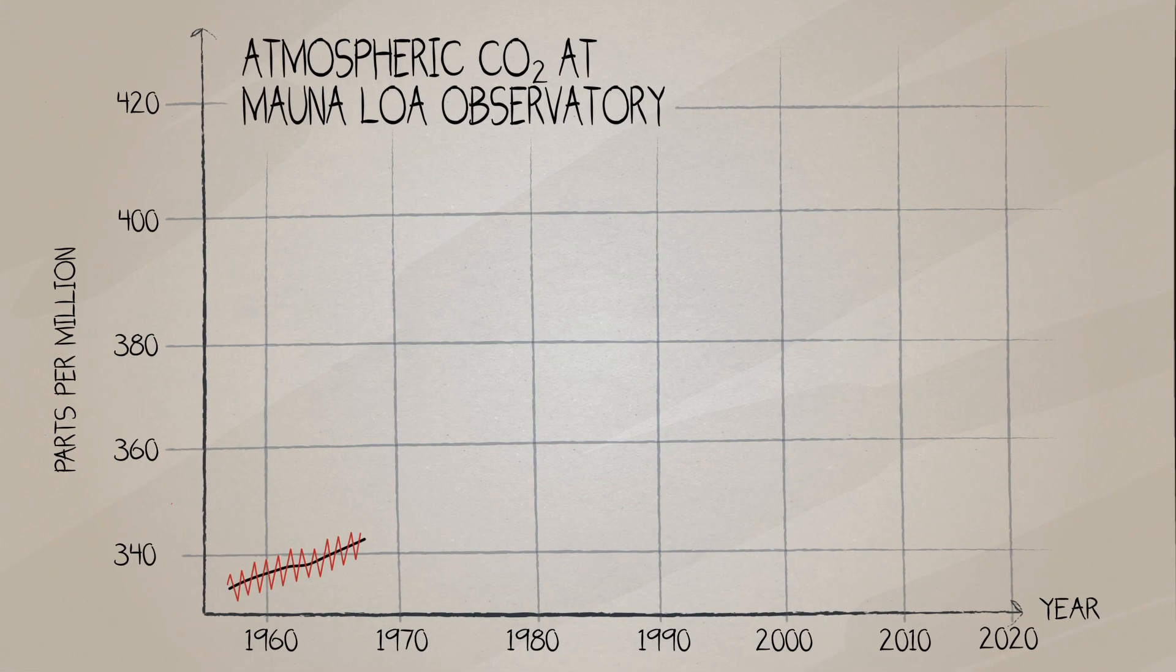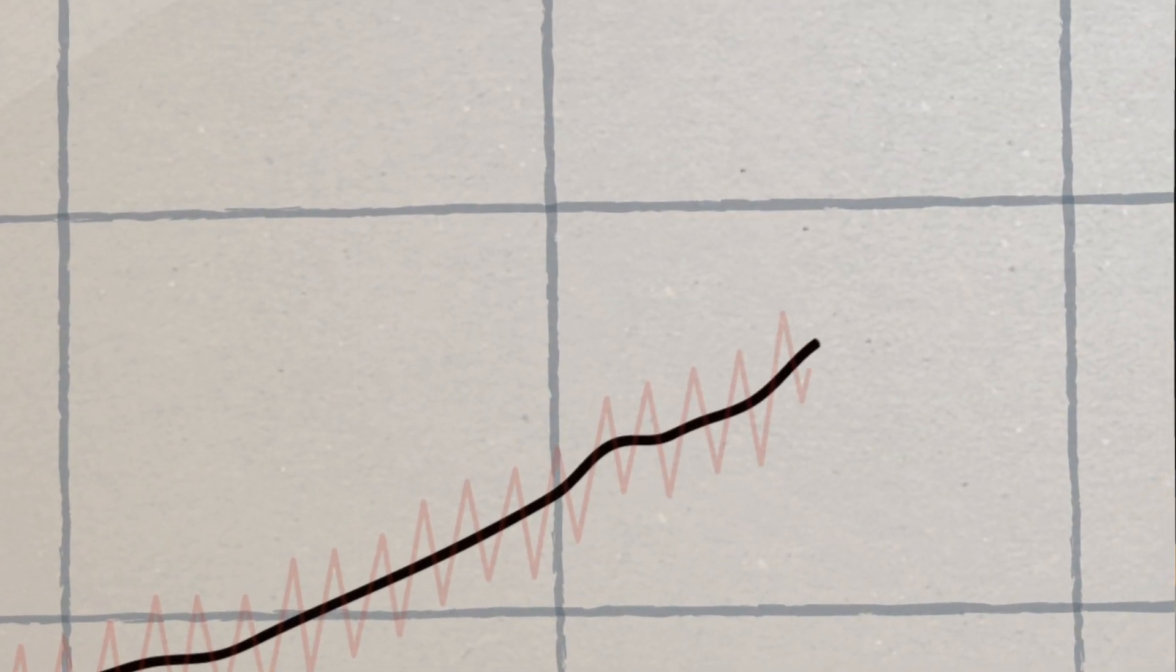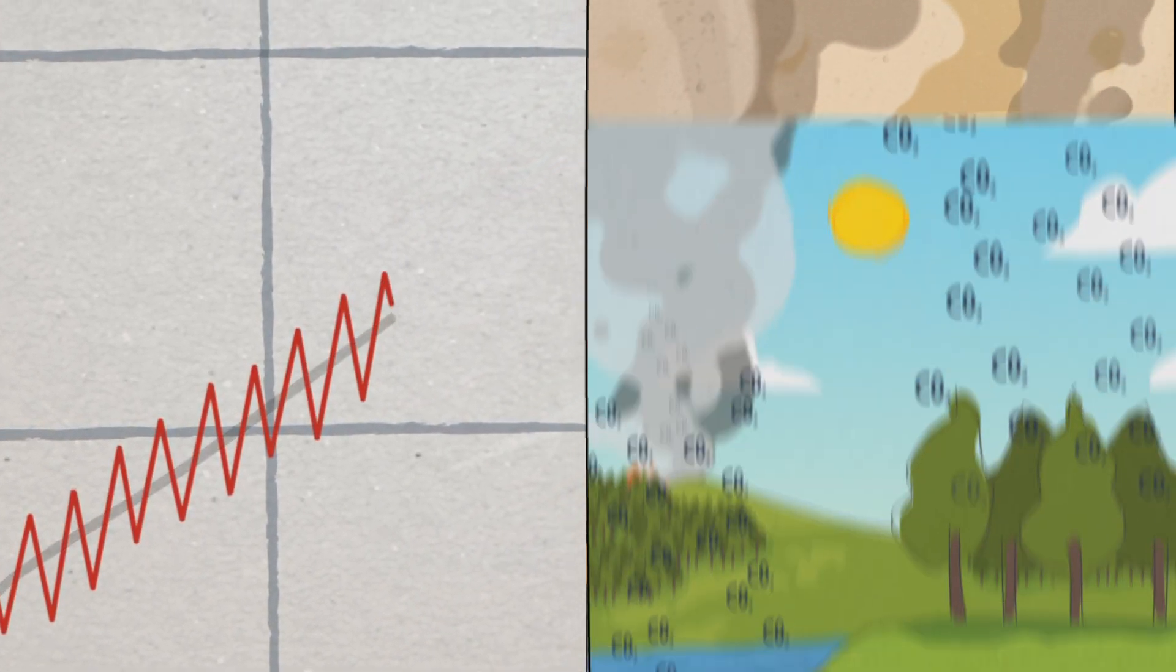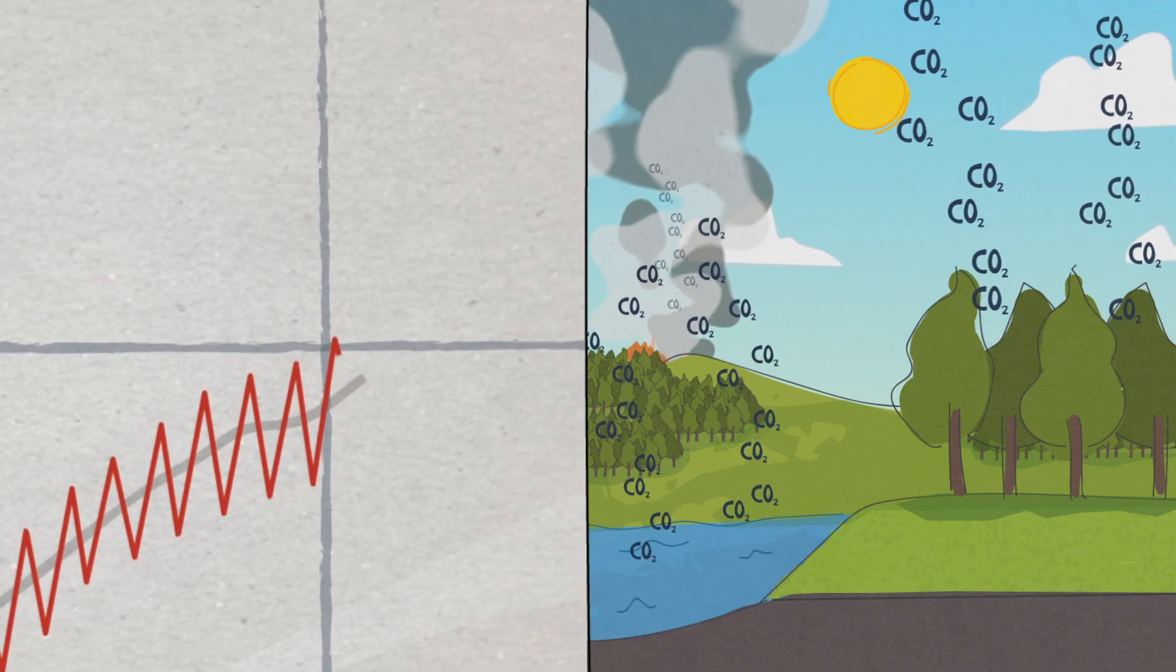This graph shows two pieces of information. The black line depicts the overall upwards trend caused by human activities. The red zigzag shows the increases and decreases caused by the Earth's natural carbon cycle.